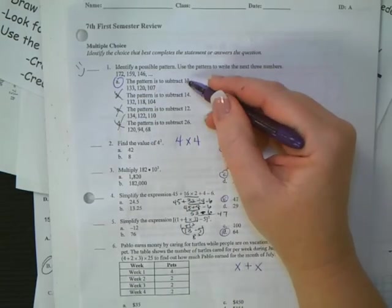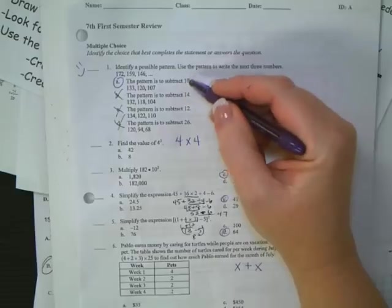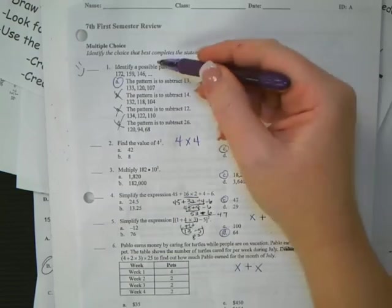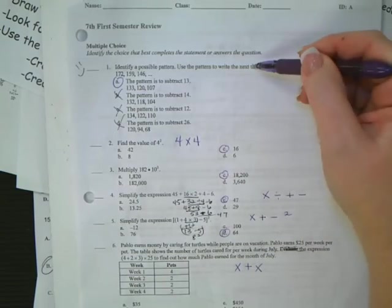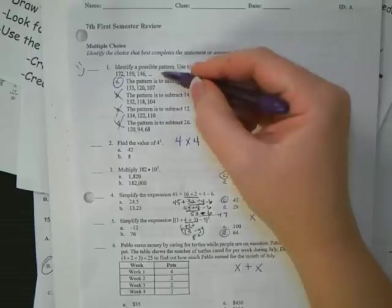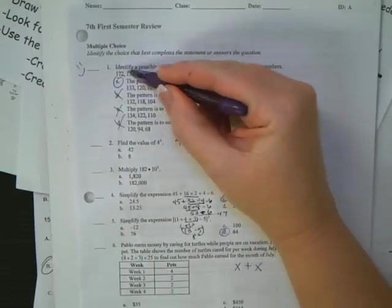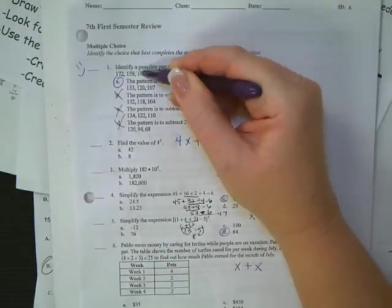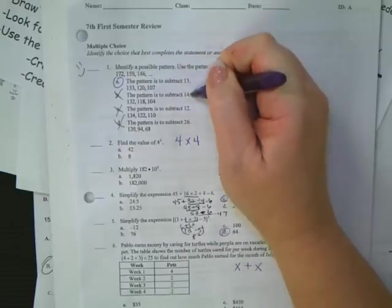And number one, I'm supposed to identify a pattern and use it to write the next three numbers. From 172 to 159, then to 146. I know I'm going down by 13 every time. Now I checked it with 14, 12, and 26, and it just doesn't work for these others. So I know it's A, and that way I can put a smiley face if I'm 100% sure.